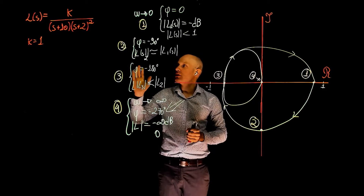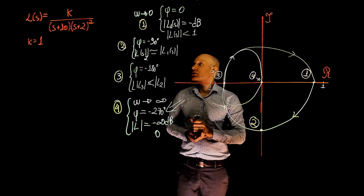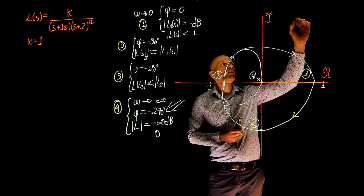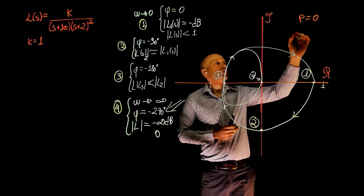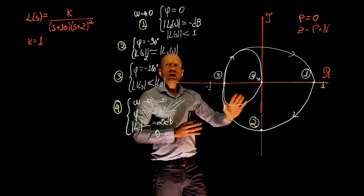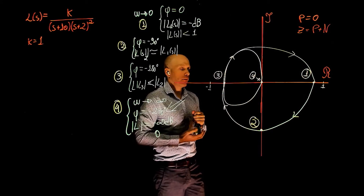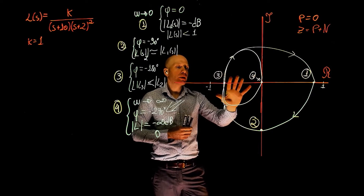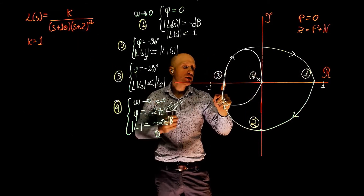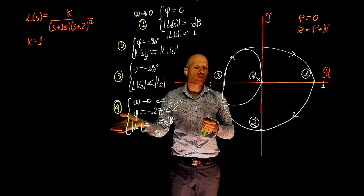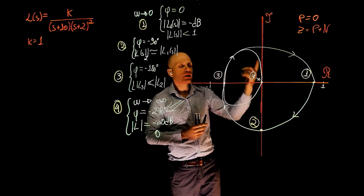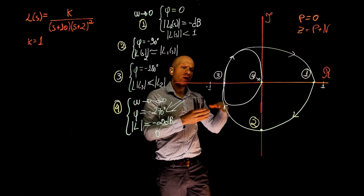What can we conclude from this analysis? Is this system closed-loop stable or unstable? It depends on the value of k. Do we have any unstable poles or zeros in the open-loop transfer function? No. So p equals 0, and the number of unstable closed-loop poles is z equals p plus n. For a certain range of k, we are to the left of negative 1 — there are no encirclements of negative 1, n is 0, so z equals 0, and the system is closed-loop stable. If we increase k, this point will shift and eventually go to the left of negative 1, and then the Nyquist plot will encircle negative 1 twice in the clockwise direction, making n equal to 2, so z becomes 2 — the system has 2 unstable closed-loop poles and becomes unstable.